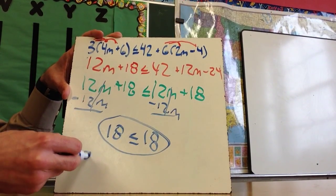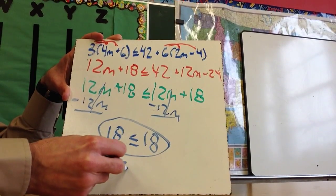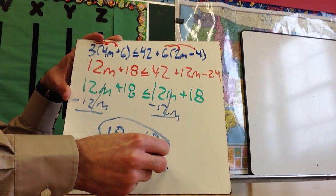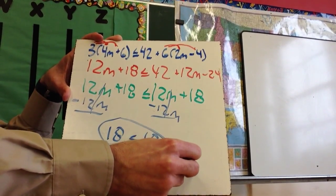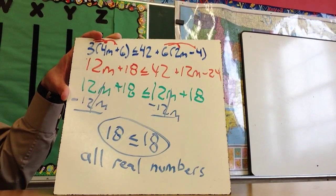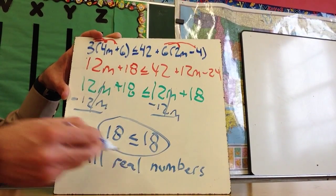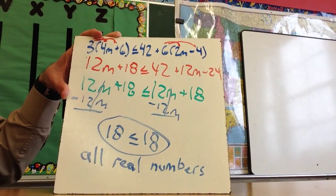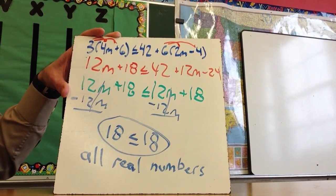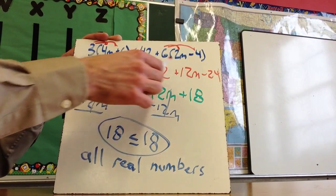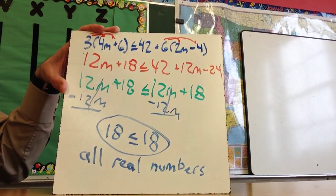So if that's true, this is where you get all real numbers. And again, you do not need to put this inside of fancy parentheses. You can just write the three words. But this is all real numbers, because any number will work. And if you want to check it, you could take any number you want for m, substitute it in there, and this statement would be true.